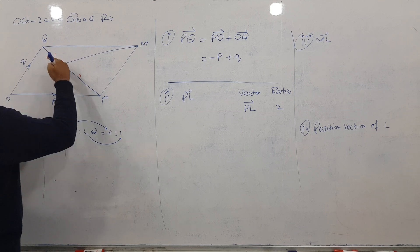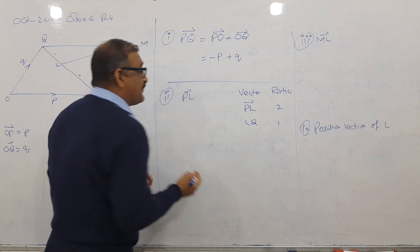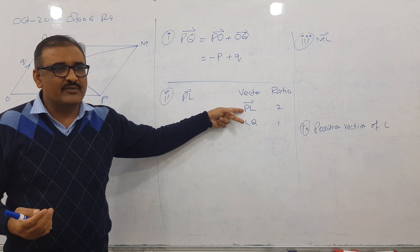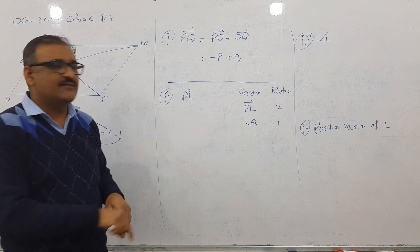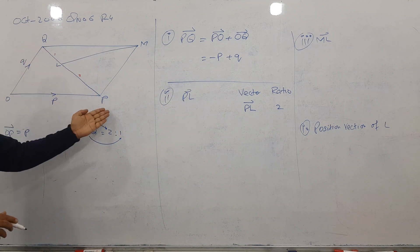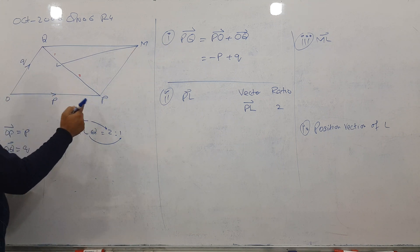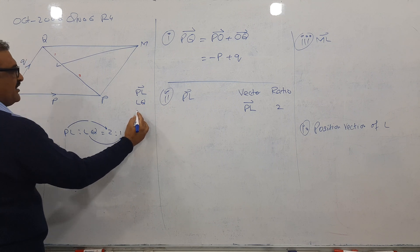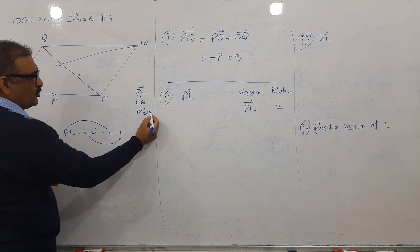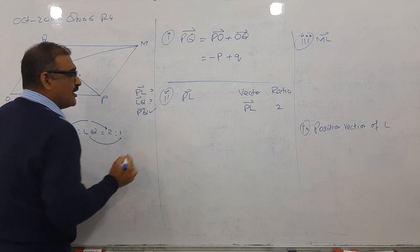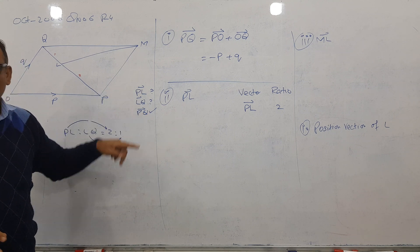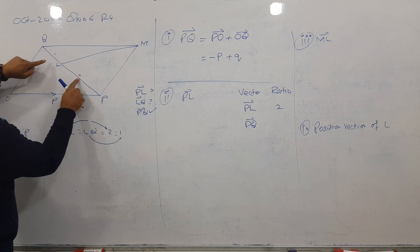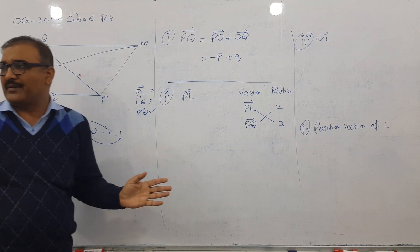I could write PL and LQ, but I don't have either of them — two unknowns can't be solved together. So I rub it out and look on the same line for something known. On this line there are three vectors: PL, LQ, and PQ. PQ is the known one, so I use PQ. The total ratio is 2 plus 1 equals 3.